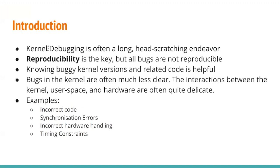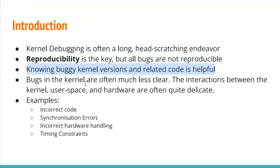Kernel debugging is a very tedious and difficult task. Most of the time the problem is that if something bad is happening in the kernel, if we can reproduce that problem then we say half of the problem is solved. But the reproducibility of that problem is sometimes very low. If we know which version of the kernel was working and which is not, that helps us understand where to search for the problem.